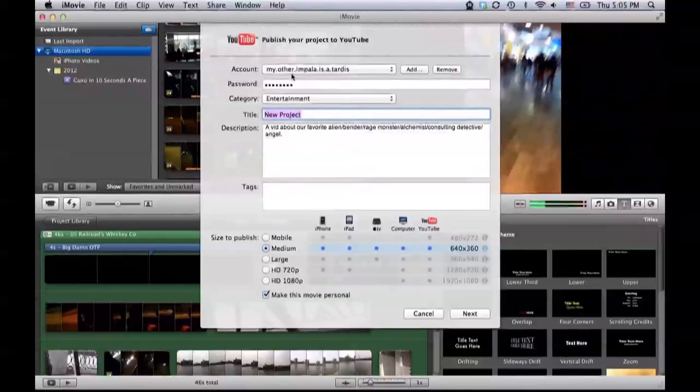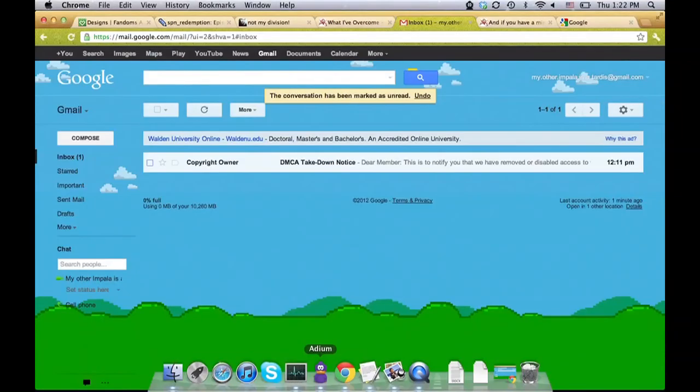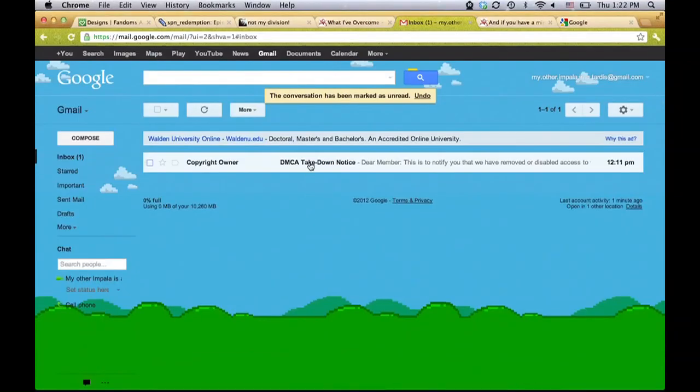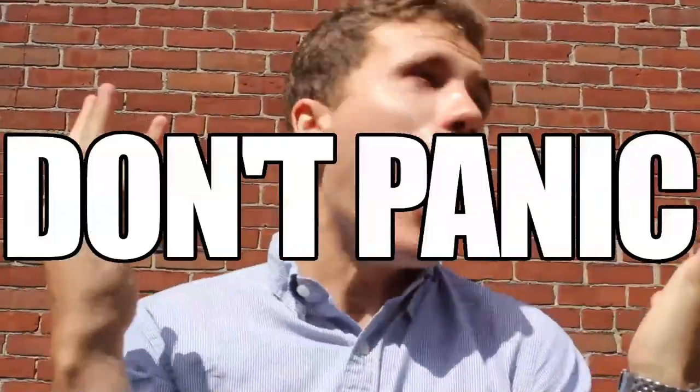So you're fangirling around, making a vid about your favorite alien, Bender, rage monster, alchemist, consulting detective, or angel when you upload it and BAM! You got a DMCA takedown notice from a copyright holder. So what can you do?